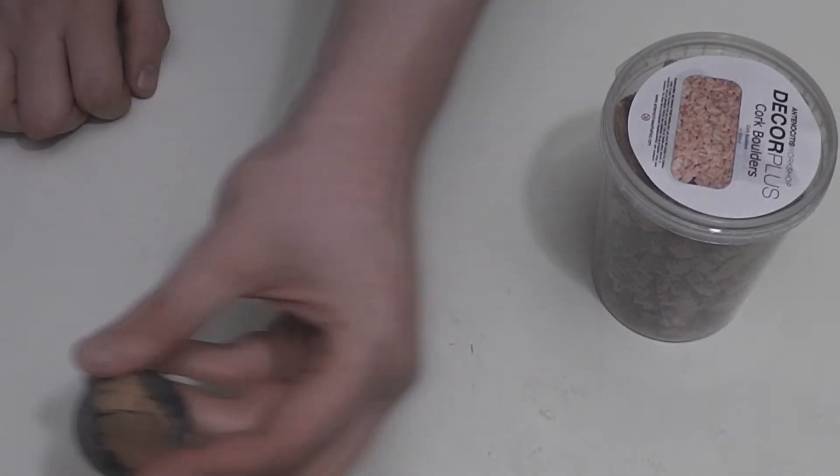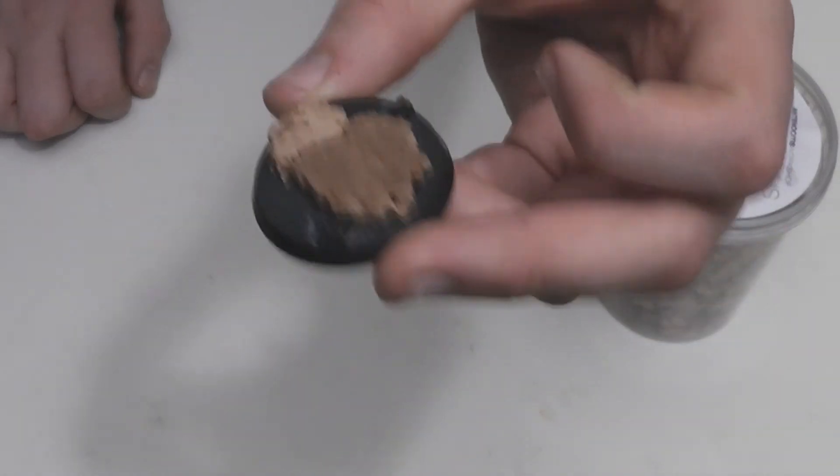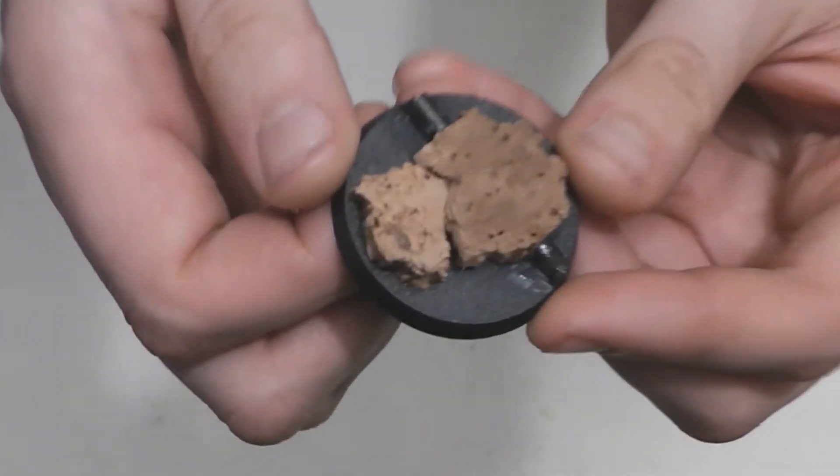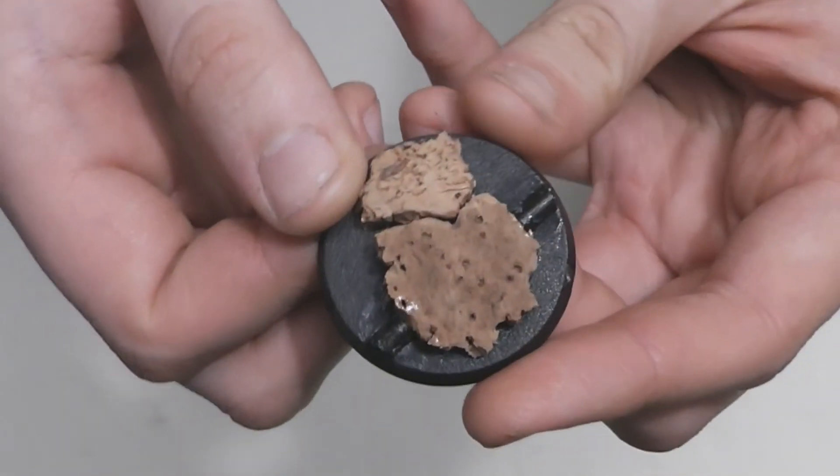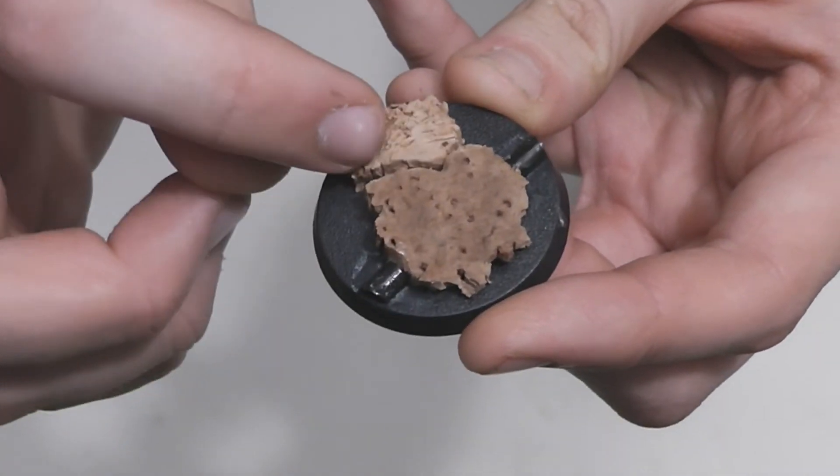And here's the second one I made. This one is using two separate pieces of cork boulder, and I shaped and glued them to look like one piece with a crack going through the middle.